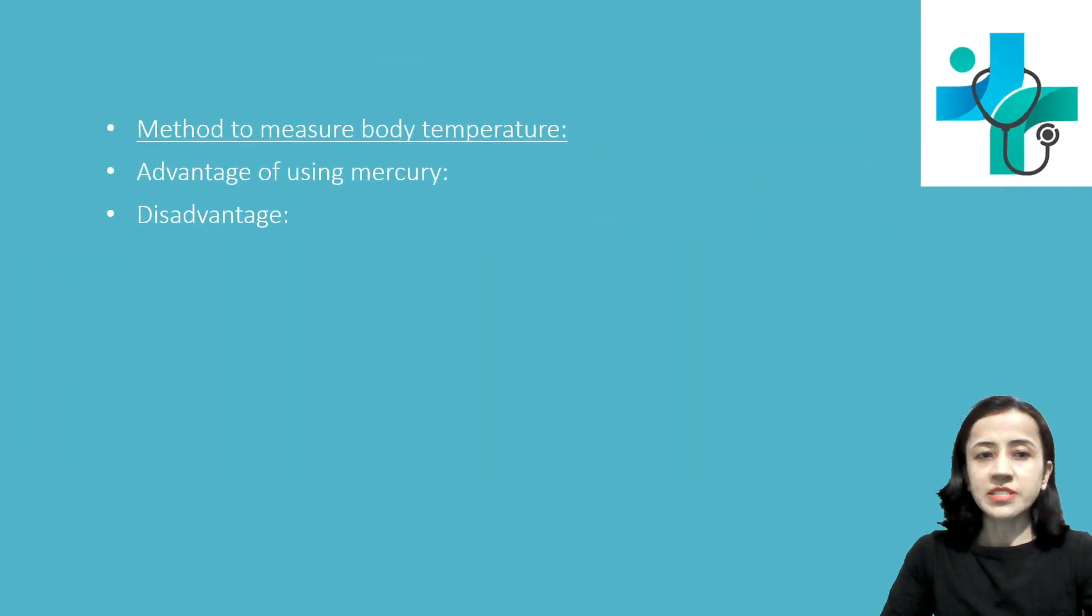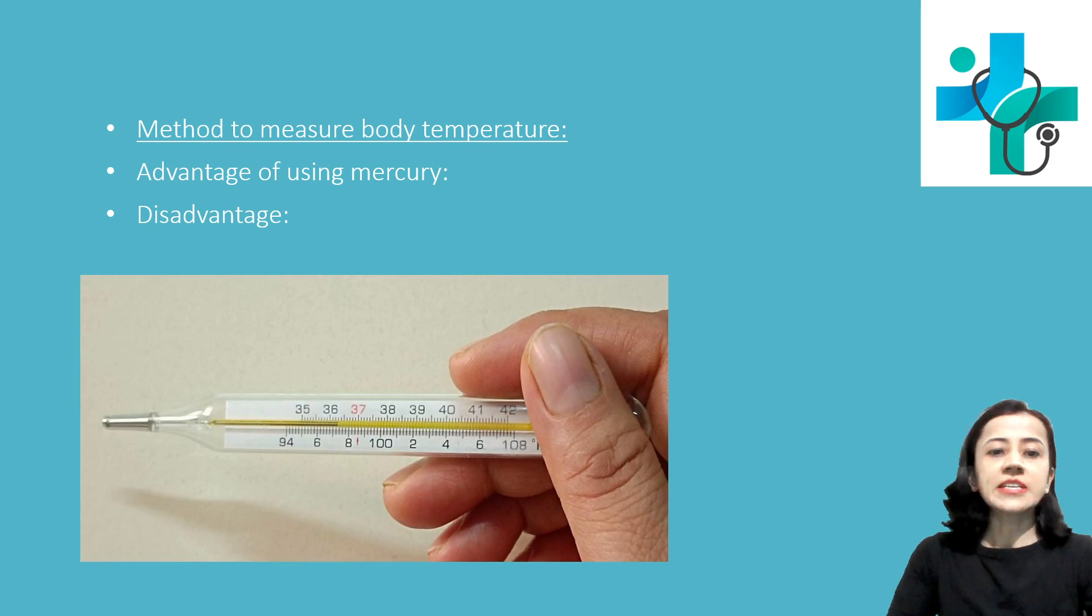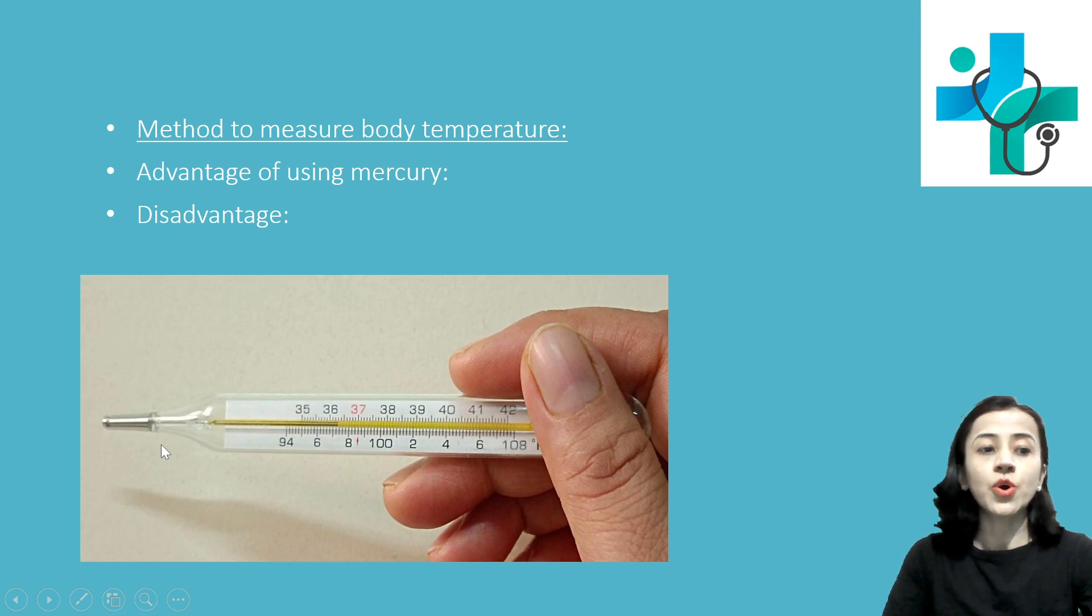Methods to measure body temperature: For that, keep the thermometer, mainly the bulb part, in contact with the body. Either you can place it in the mouth or in the armpit or in the rectum. Rectal thermometer has different shape of bulb.